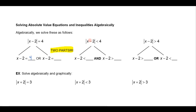Or, if I'm solving the absolute value of x minus 2 is less than 4, just drop the absolute value and say x minus 2 is less than 4. Or in the third case, if it's greater than 4, just drop the absolute value and you have x minus 2 is greater than 4.